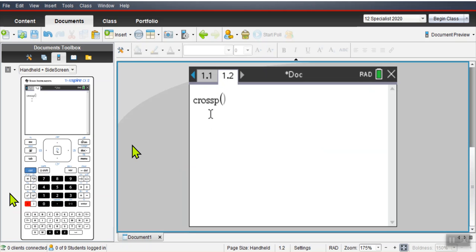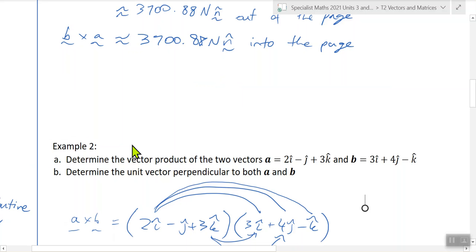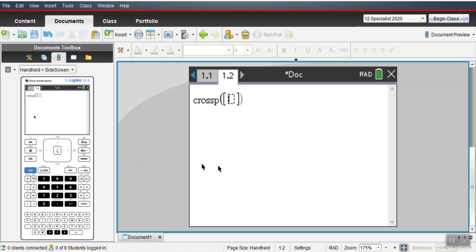Bracket. It doesn't have to be a capital. Cross P. And then we type it in. Two, so that's the I. Negative one is the J. And three is the K. That's the first vector with square brackets.